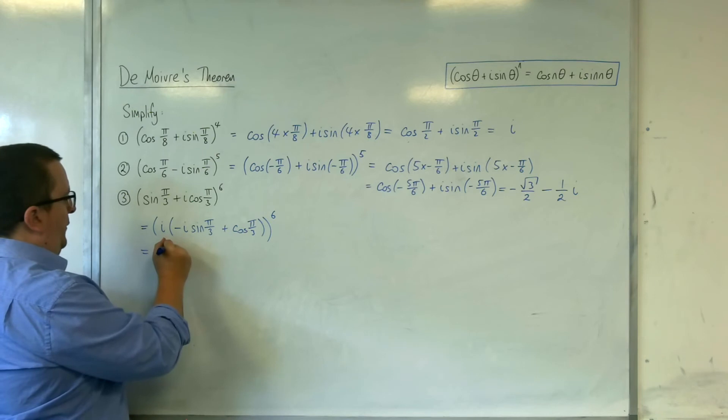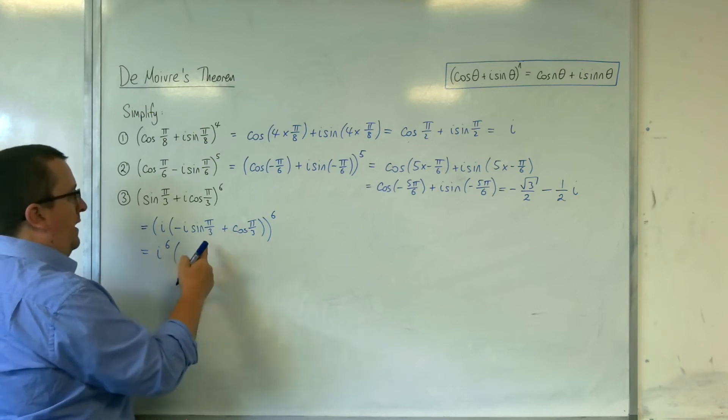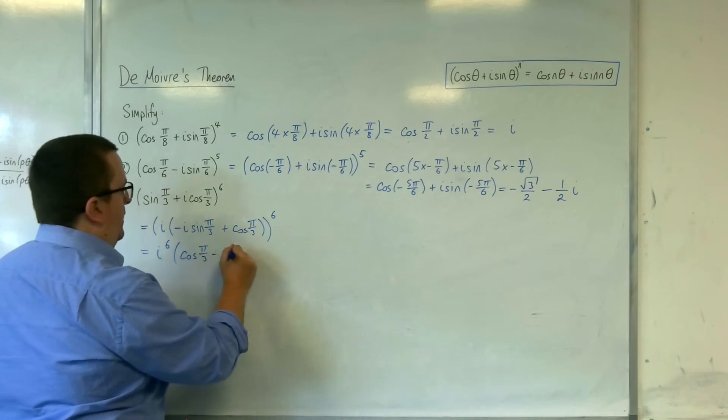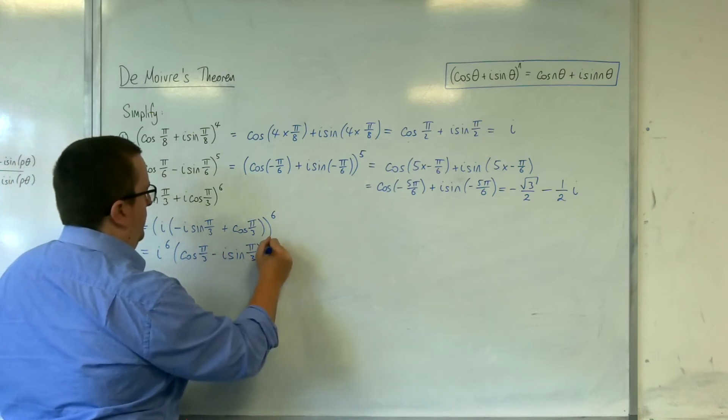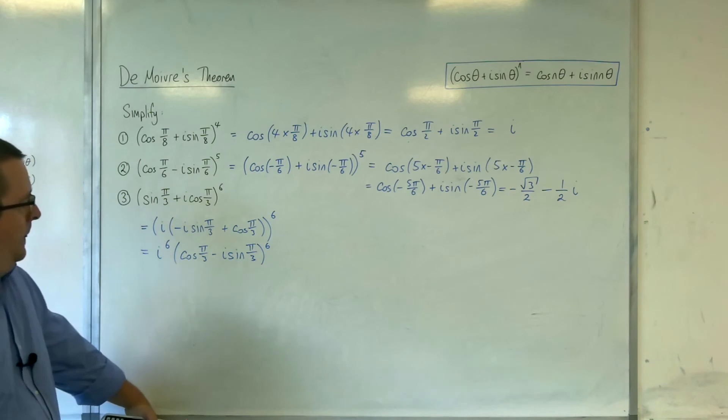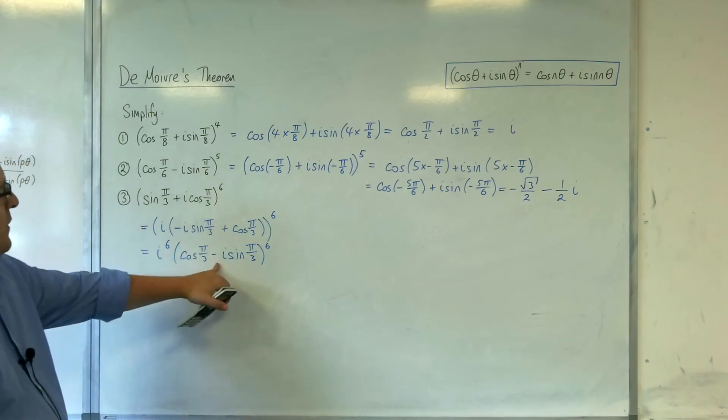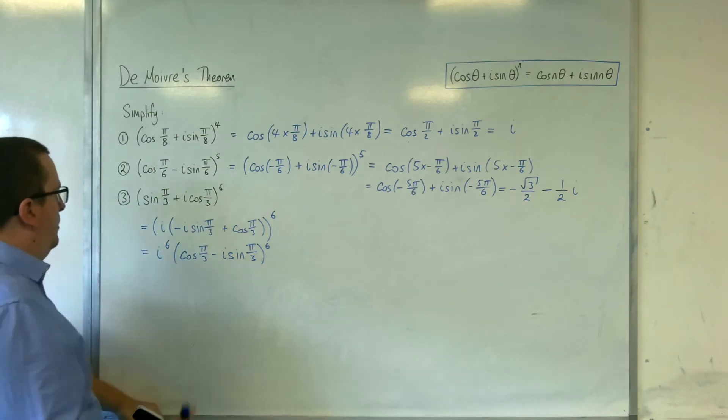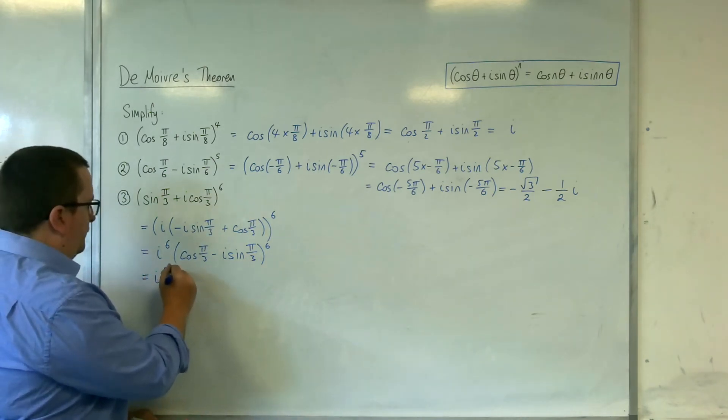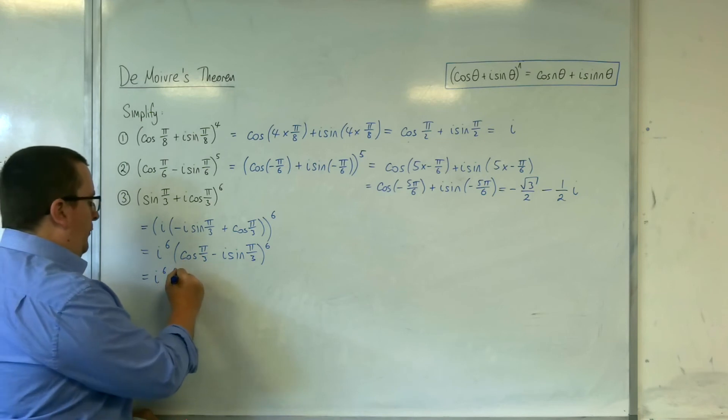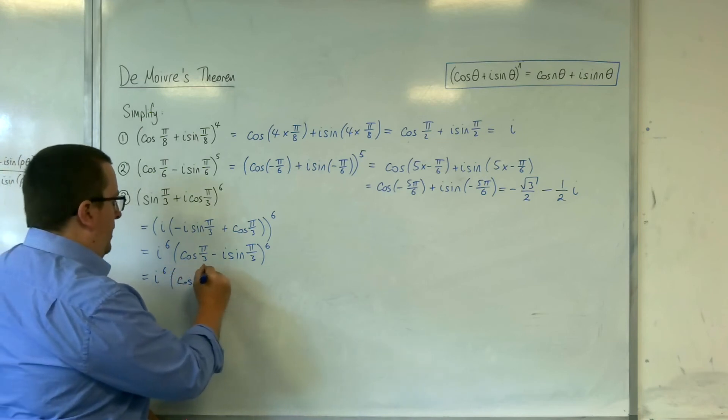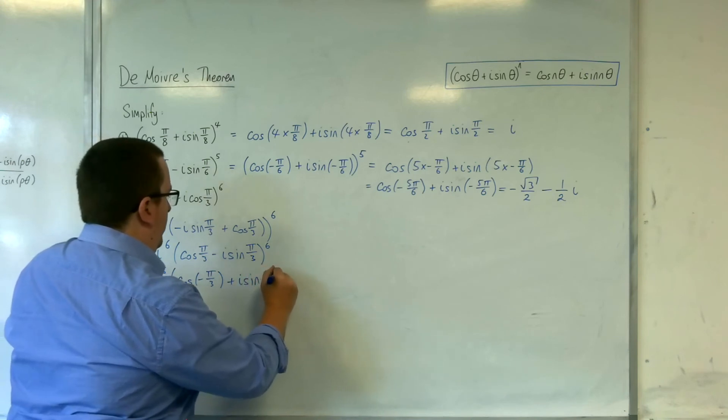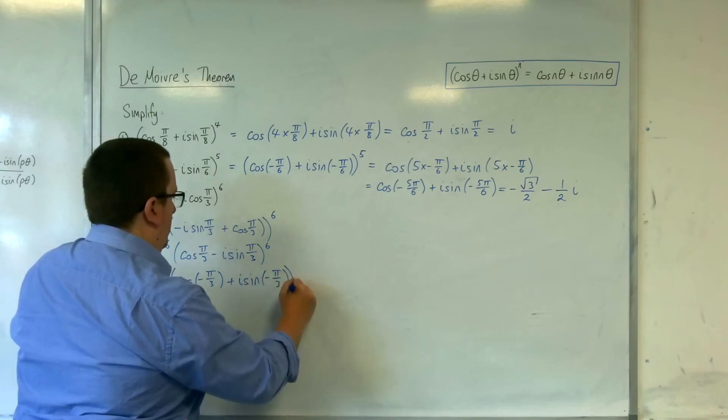So I've got i to the 6, and I'm going to rewrite that in this format: cosine of π over 3 take away i sine π over 3 to the 6. Now I've got this minus sign and I can use the same trick as I used up here for example number 2. So I've got i to the 6, cosine of minus π over 3 plus i sine of minus π over 3 to the 6.